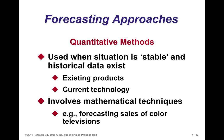Quantitative methods include time series methods, where data is ordered chronologically. There are also associative models where you have a relationship between multiple variables. Quantitative methods are used in situations where historical data exists and can be applied to existing products and current technology, involving mathematical techniques — such as forecasting sales of color televisions.